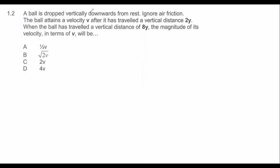A ball is dropped vertically downwards from rest. Ignore air friction. The ball attains a velocity of v after it has traveled a vertical distance of 2y. When the ball has traveled a vertical distance of 8y, what would the velocity be?